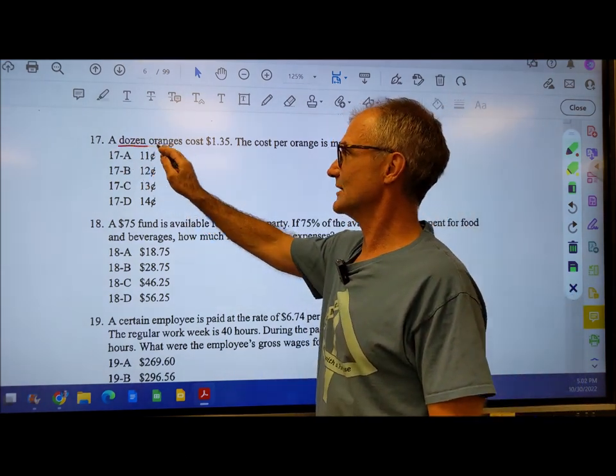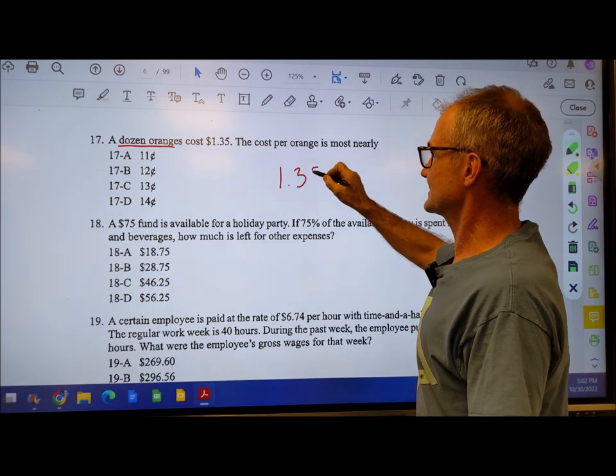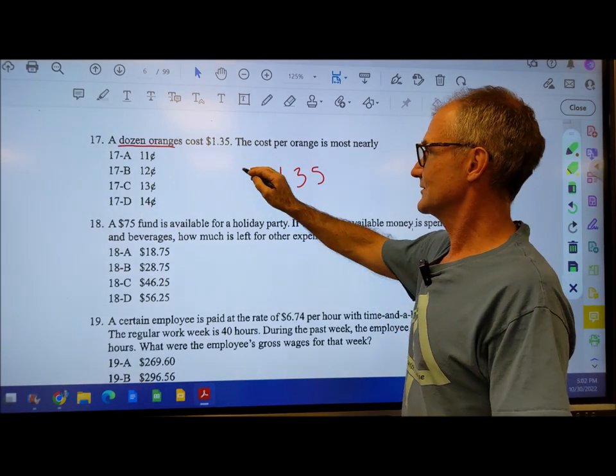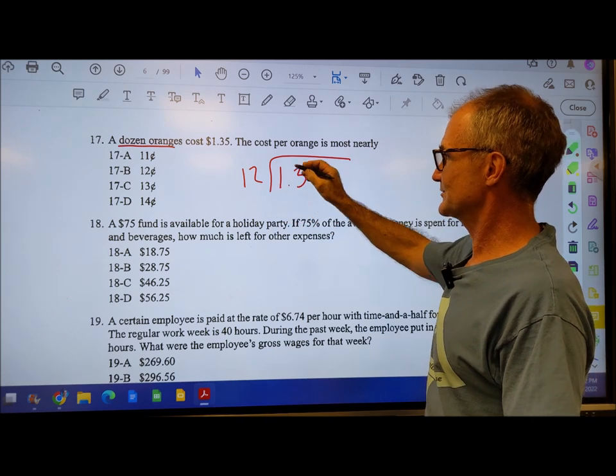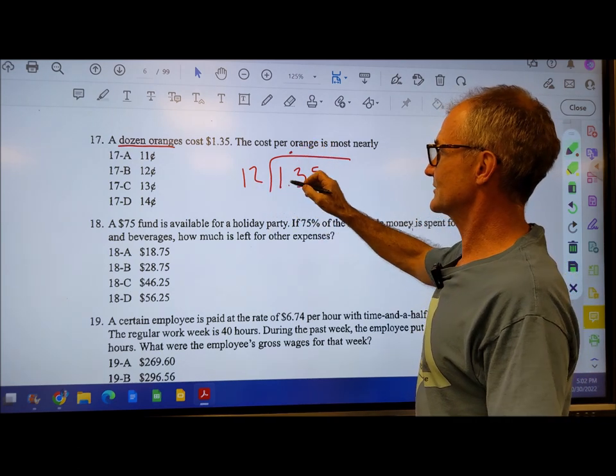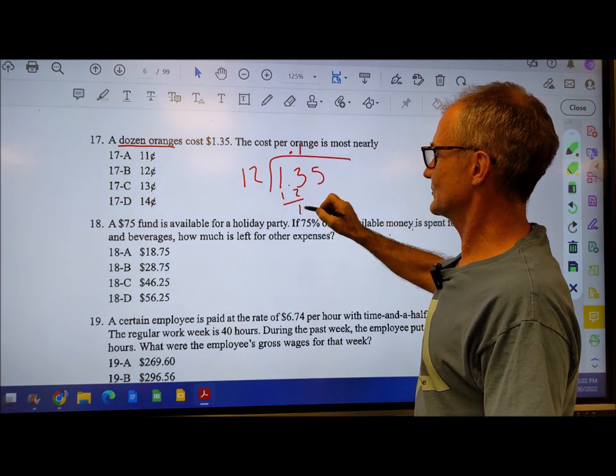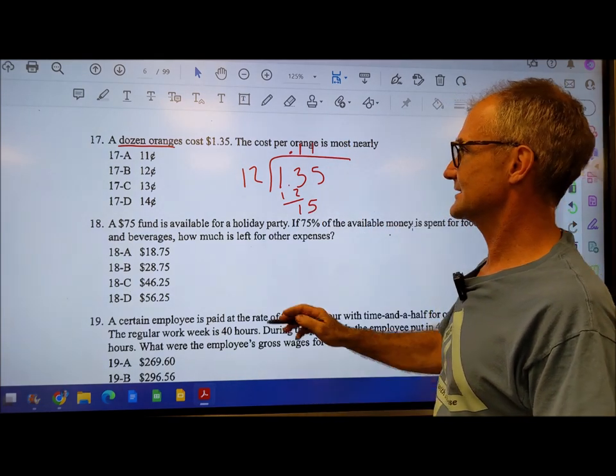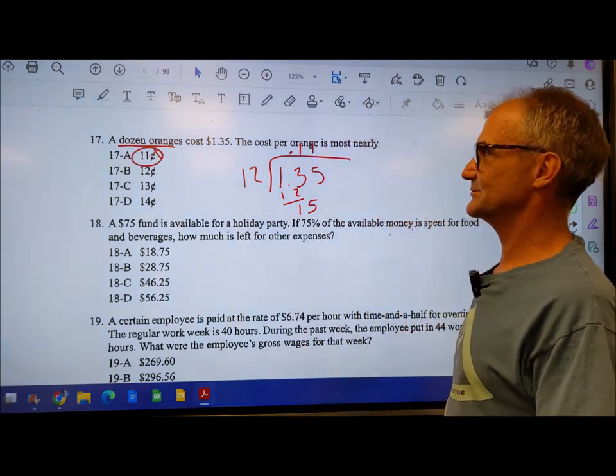A dozen oranges, so 12 oranges cost $1.35. What is the cost per orange? $1.35 divided by 12. There's no decimal places in that, so I just bring this one up. 12 goes into 13 one time. 3 minus 2 is 1, bring down the 5. It's approximately 11 cents per orange.